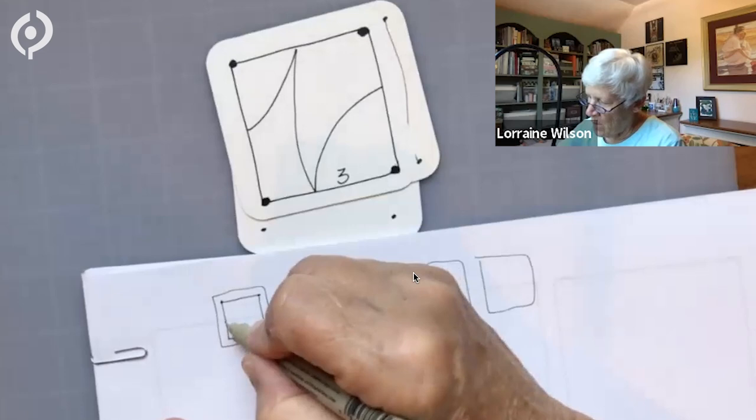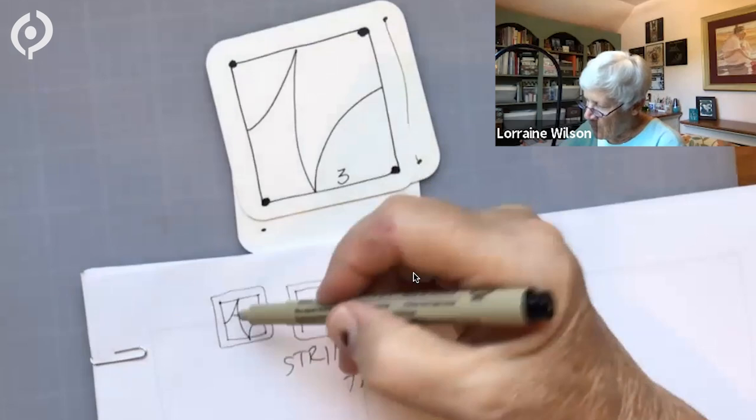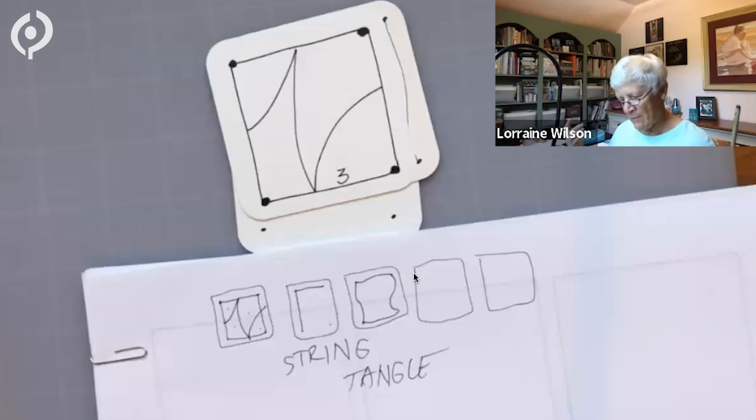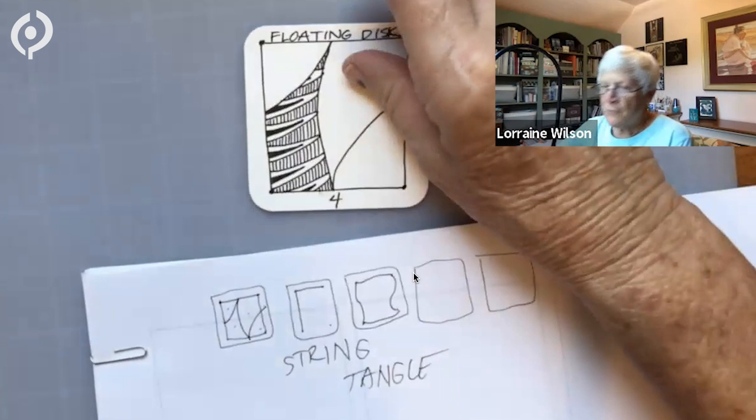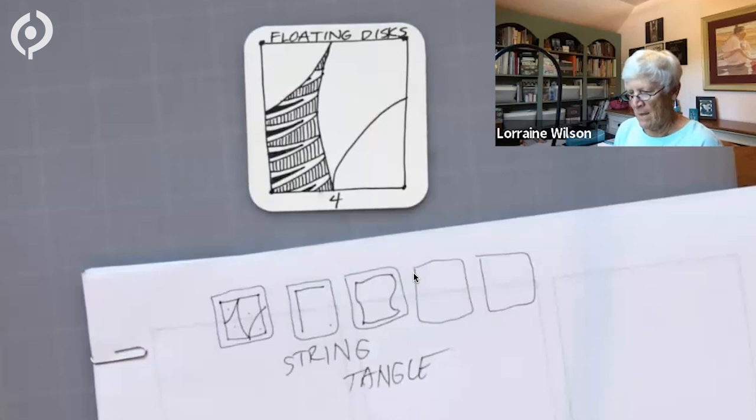So here's an easy string. Watch this. You just go back here. One, two, three. Voila. Now I have one, two, three, four. I'm going to use four Zentangle patterns of my choosing. And all of these patterns have names. I rarely worry about the names. I wrote them down for you just in case. So the first pattern I chose to use was called Floating Disks. Let me show you how they do that one.